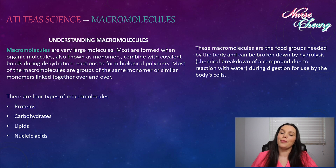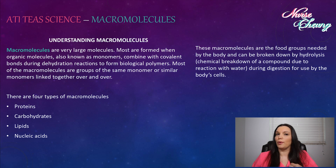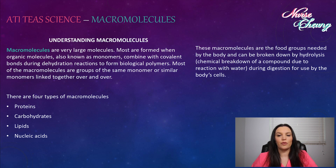To begin, we have to understand what macromolecules are. Macromolecules are very large molecules. Most are formed when organic molecules, also known as monomers, combine with covalent bonds during dehydration reactions to form biological polymers. Most macromolecules are groups of the same or similar monomers linked together over and over again. There are four types: proteins, carbohydrates, lipids, and nucleic acids. These molecules are food groups needed by the body and can be broken down by hydrolysis — the chemical breakdown of a compound due to reaction with water — which happens during digestion for use by the body's cells.